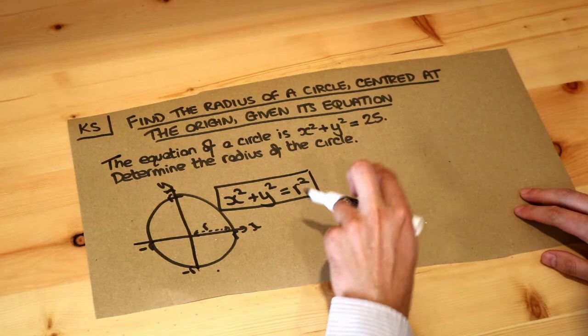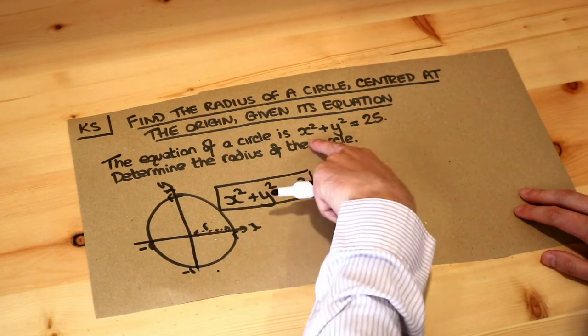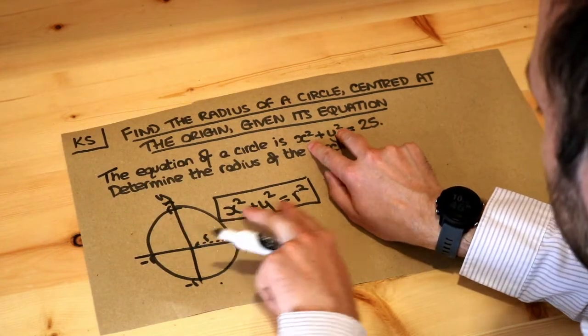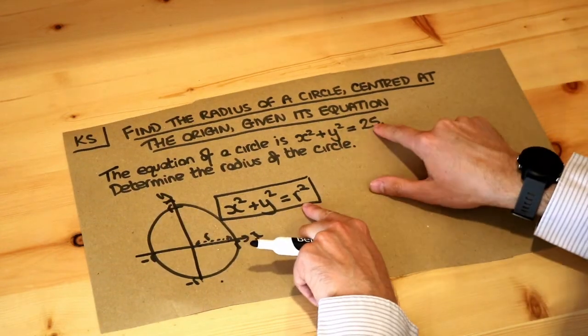So if we compare the x squared plus y squared equals r squared to the x squared plus y squared equals 25, the x squared plus y squareds match and that means the r squared is equal to 25.